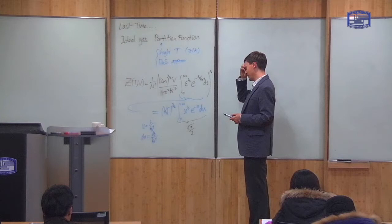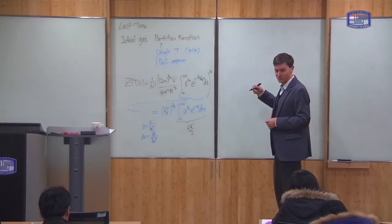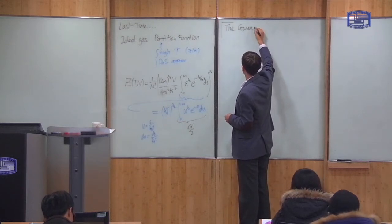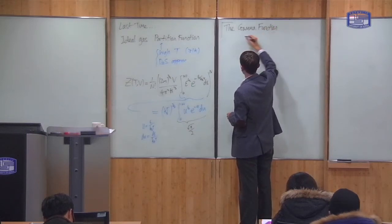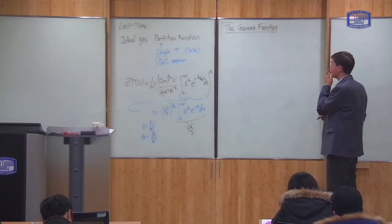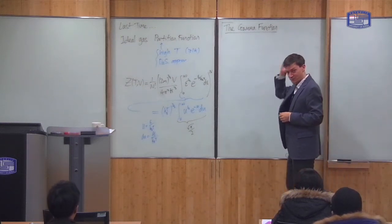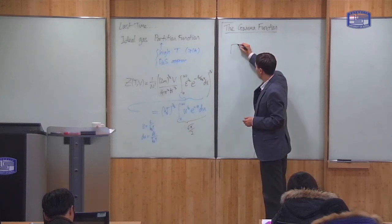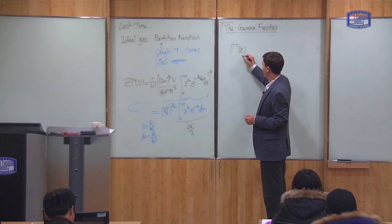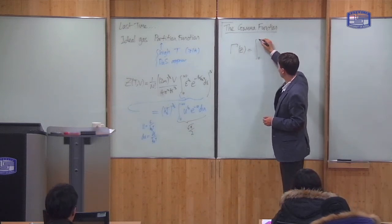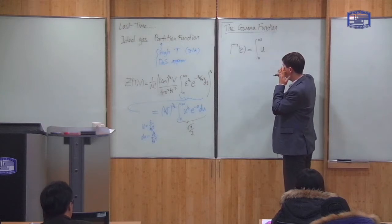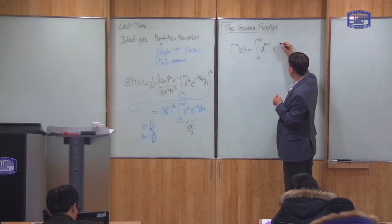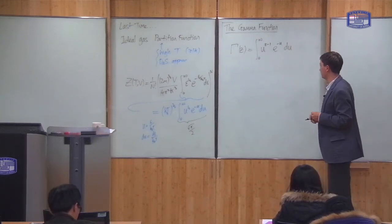I'll prove this now, and in doing so I'll talk about an important function we will use several times: the gamma function. The gamma function, which you may or may not have seen before, is very common in statistical physics. It is defined as: Γ(z) = integral from 0 to infinity of u^(z−1) times e^(−u) du.